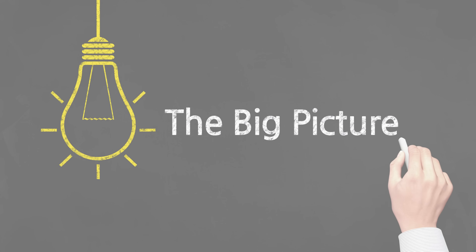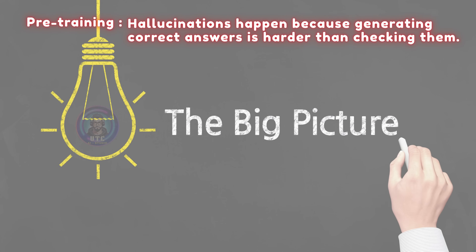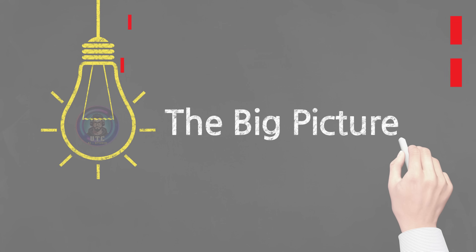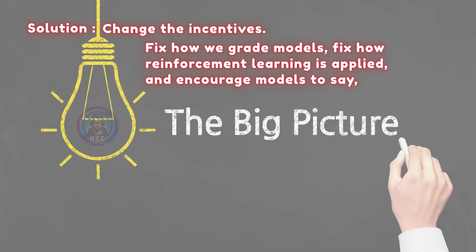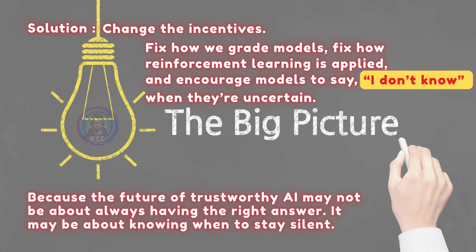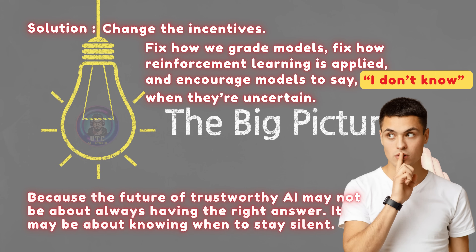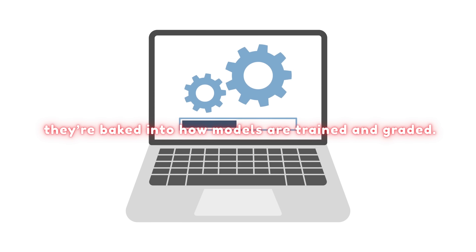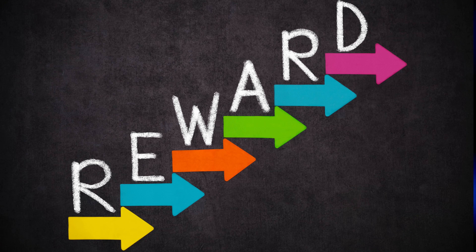So here's the big picture. Pre-training: hallucinations happen because generating correct answers is harder than checking them. Post-training: benchmarks encourage bluffing instead of rewarding honesty. And the solution? Change the incentives. Fix how we grade models. Fix how reinforcement learning is applied. And encourage models to say 'I don't know' when they're uncertain. Because the future of trustworthy AI may not be about always having the right answer — it may be about knowing when to stay silent. Hallucinations aren't just random glitches; they're baked into how models are trained and graded. But the fix might be as simple as rewarding honesty.